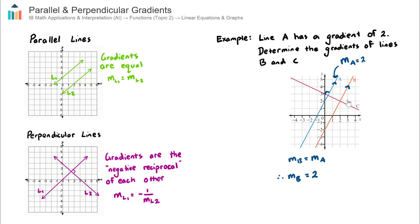Let's now have a look at line C. Line C is perpendicular to line A. Using this relationship here, the negative reciprocal, we can say that the gradient of line C will equal negative 1 on the gradient of line A, the negative reciprocal of its perpendicular line.